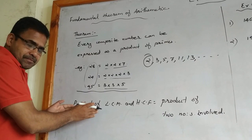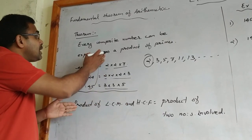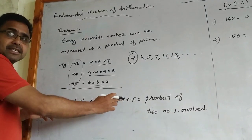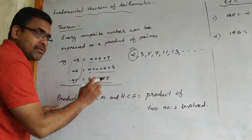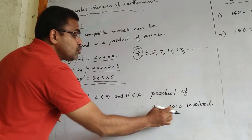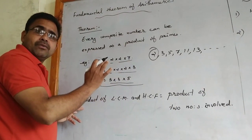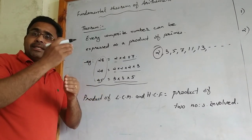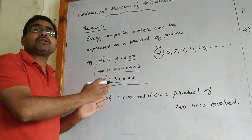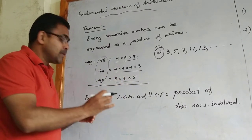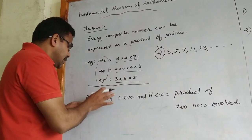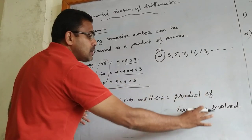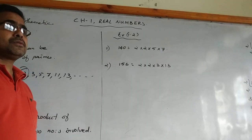Here is another theorem, also part of the Fundamental Theorem of Arithmetic. After calculating the LCM and HCF, the product of LCM and HCF is equal to the product of the two numbers involved. That means if you calculate the HCF and LCM of two numbers, the product of those two numbers will equal the product of HCF and LCM.